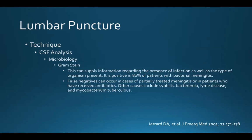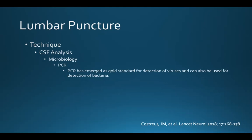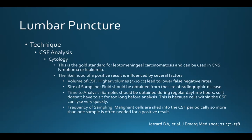Depending on why we're doing the spinal tap, we may want microbiology involved. A gram stain can provide information regarding the presence of infection and the type of organism — it's positive in 80% of patients with bacterial meningitis. False negatives can occur in partially treated meningitis or after antibiotics. Other causes include syphilis, bacteremia, Lyme disease, and TB. A culture can also be performed — the yield from CSF culture in bacterial meningitis is 70 to 85%. Less than 50% of cultures will be positive in patients who've received antibiotics. PCR has emerged as the gold standard for detecting viruses and can also detect bacteria. CSF cytology is the gold standard for leptomeningeal carcinomatosis and can be used in CNS lymphoma or leukemia.